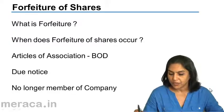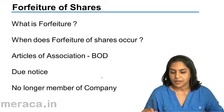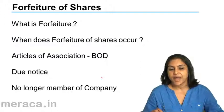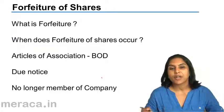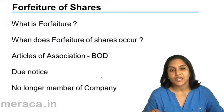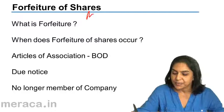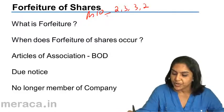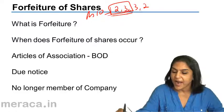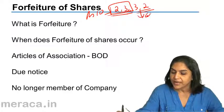What is forfeiture? When a company issues shares and money is payable in installments, it is possible that a shareholder may not pay up one or more of the installments. Let us take a rupees 10 share payable as 2, 3, 3 and 2. Let us say a shareholder pays the first two installments of 2 and 3, and does not pay the other two installments of 3 and 2. So there is a call in arrears here.